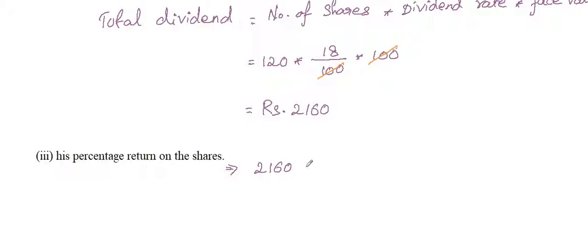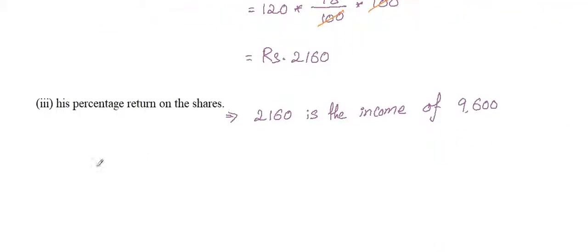Finally, find the percentage return on the shares. So the total dividend is Rs. 2,160 as the income on Rs. 9,600. So the percentage of return on the shares equals...